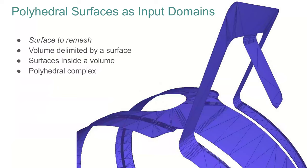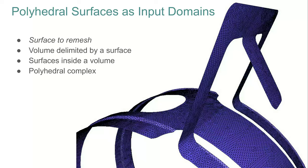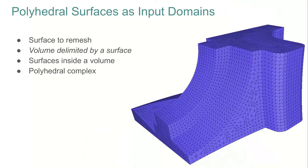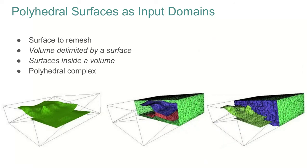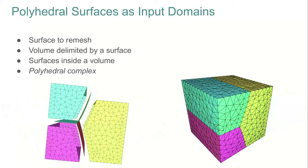Let's consider input domains defined by polyhedral surfaces. The mesh generation procedure can generate from a triangle mesh with boundaries a new triangle mesh respecting user criteria — for example, a uniform sizing field. It can generate a tetrahedral mesh of a volume bounded by a closed triangle mesh, or a tetrahedral mesh of a volume with interior surfaces represented by facets in the mesh. In a polyhedral complex with three volumes, the procedure generates a tetrahedral mesh where interfaces between volumes correspond to facets.